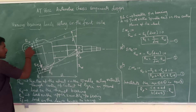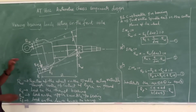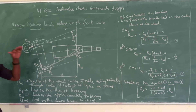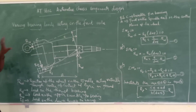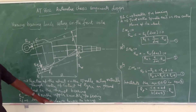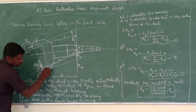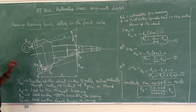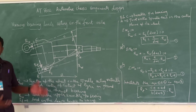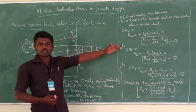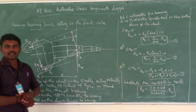The lower bearing is a thrust bearing and the upper bearing is the knuckle bearing. RU is the reaction force at the upper knuckle bearing. RL is the reaction force at the lower knuckle pin bearing. We need to find these forces using moment equations.